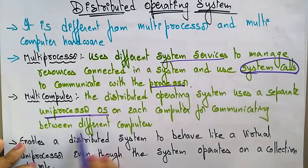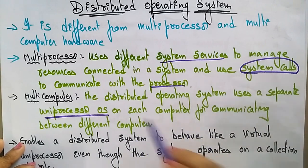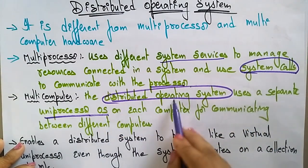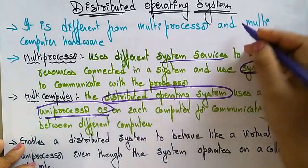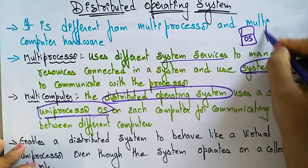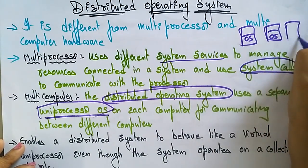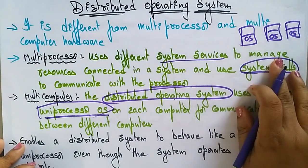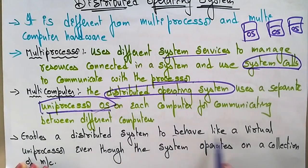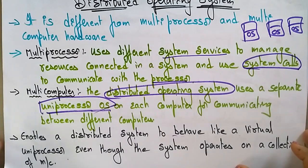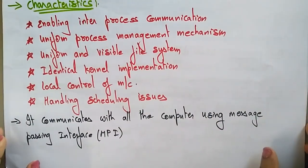If you are using the distributed operating system, each machine has its own operating system — this is called a uni operating system. The distributed operating system enables a distributed system to behave like a virtual uni-processor, even though the system operates on a collection of machines.